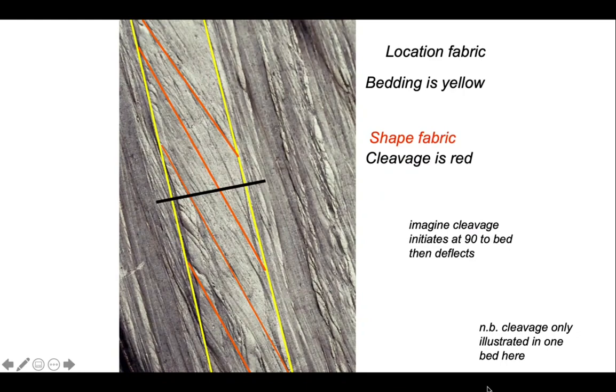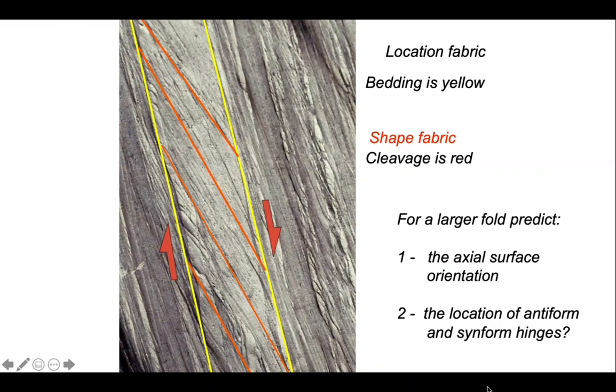Imagine the cleavage of the red line starting off perpendicular to bedding in the orientation of the black line. We just have to think about how it rotates to achieve the orientation that we see today. That's the sense of vergence picked out by the arrow pair. We can use this to predict the position of this outcrop with respect to larger scale fold structures within which it sits.